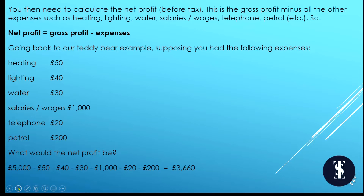You then calculate net profit before tax: that's gross profit minus all other expenses such as heating, lighting, water, salaries, wages, telephone, petrol, etc. Going back to the teddy bear example: gross profit was £5,000. Deducting heating £50, lighting £40, water £30, salary £1,000, telephone £20, petrol £200 gives a net profit before tax of £3,660.